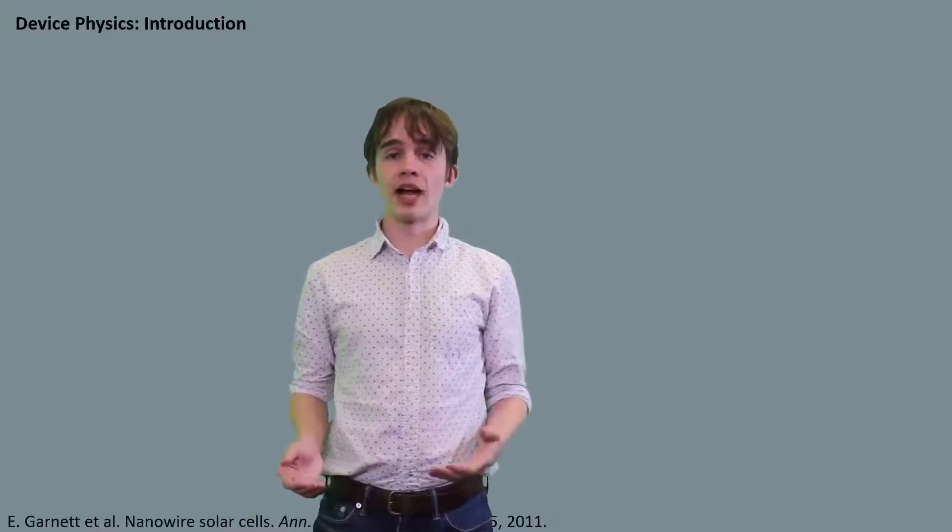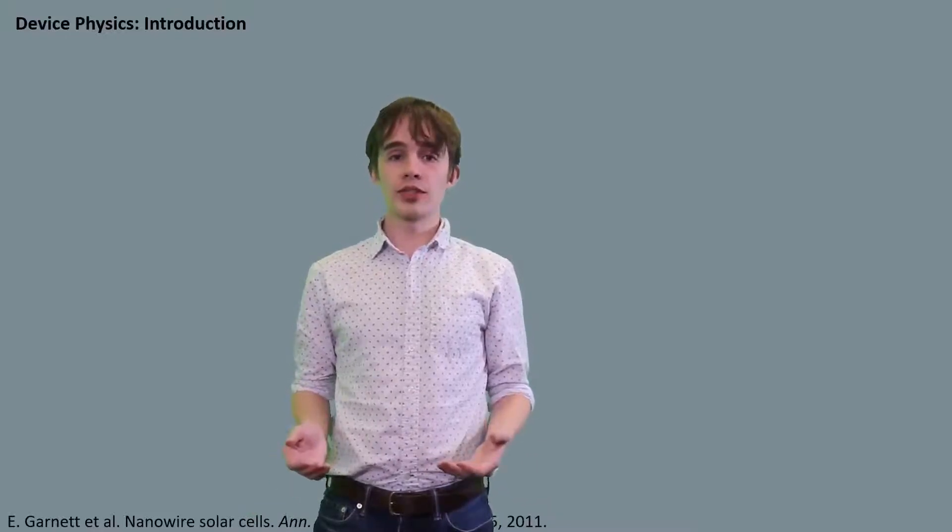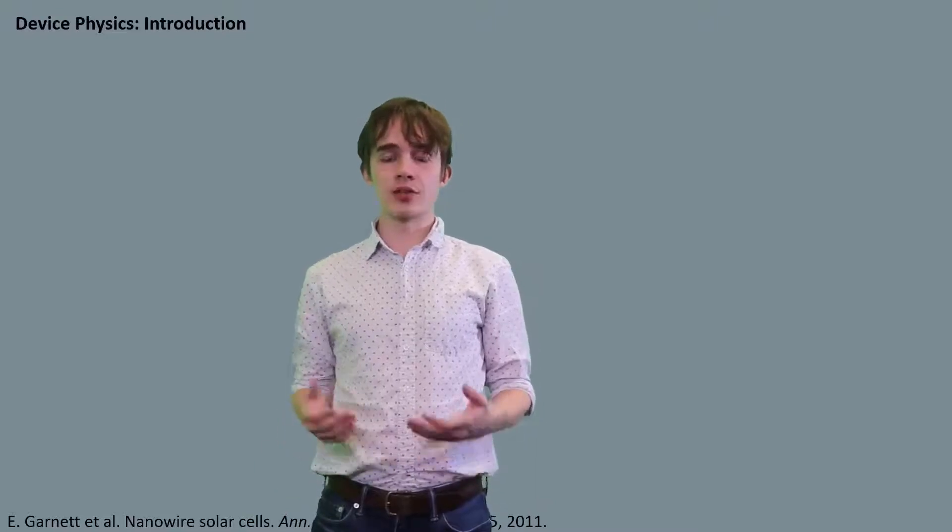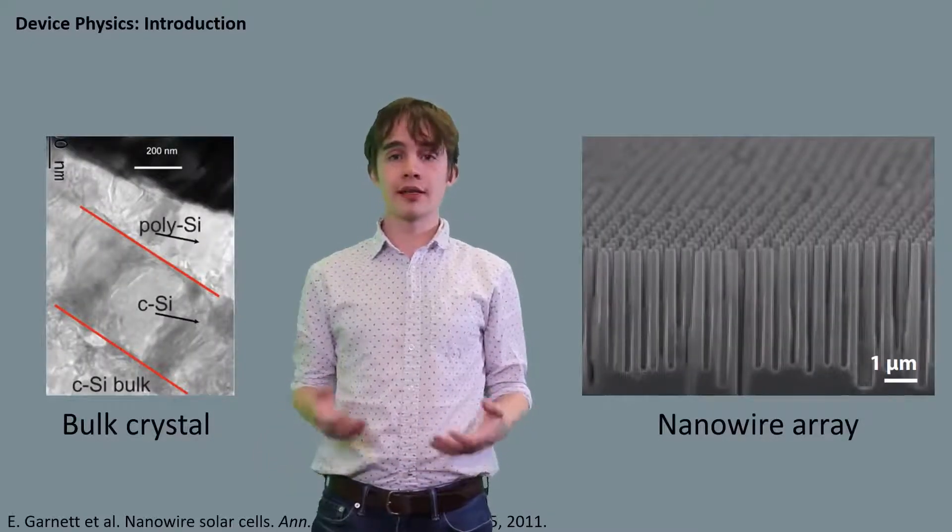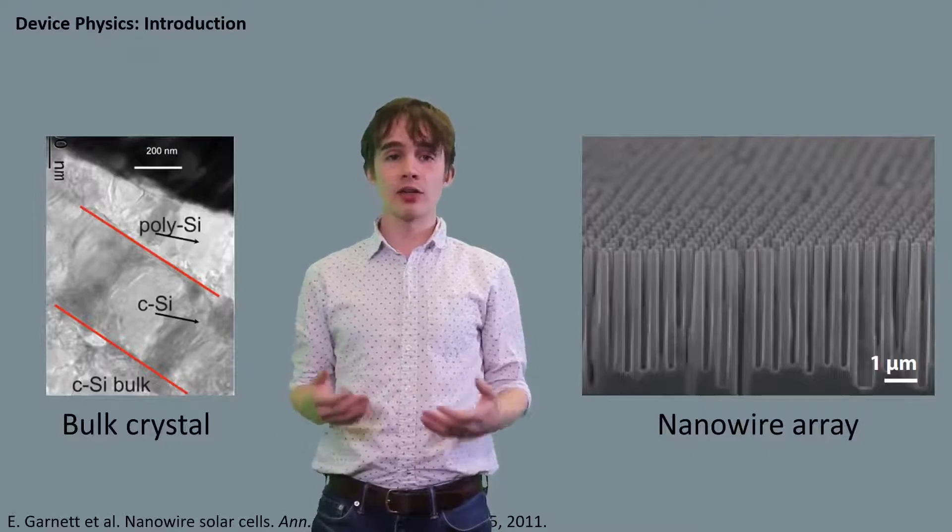Before we can understand the physical advantages of nanowire solar cells, we need to understand what they are. These devices can use the same materials as traditional solar cells, such as silicon or gallium arsenide, but instead of a bulk planar configuration, it's formed into arrays of tightly packed, small-scaled wires.